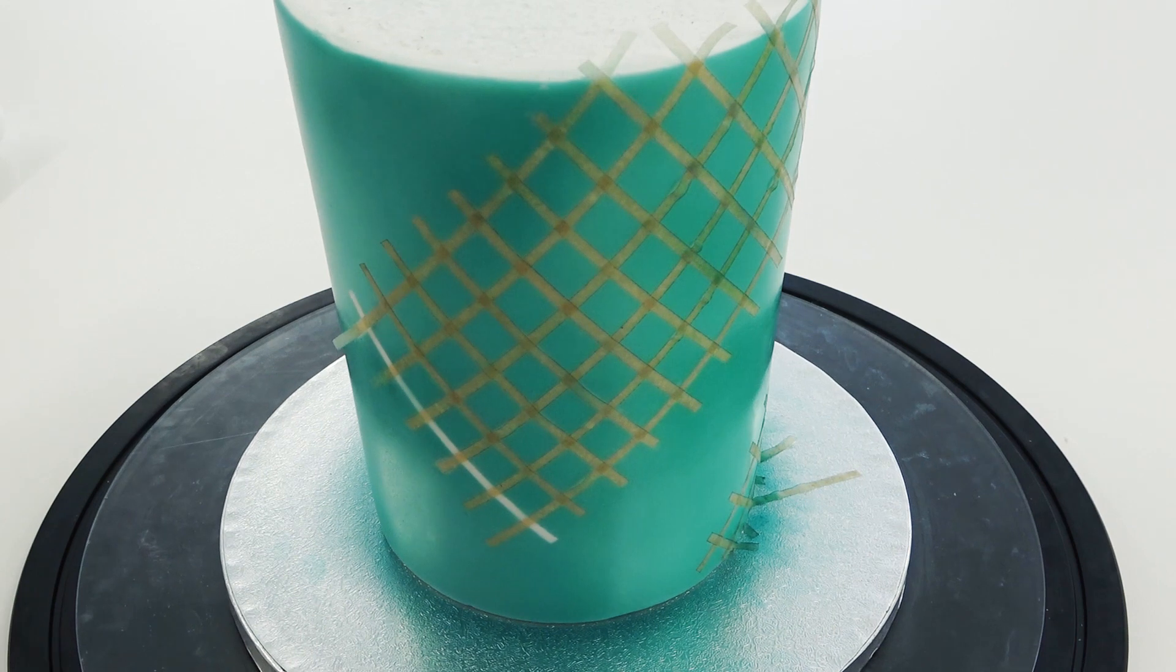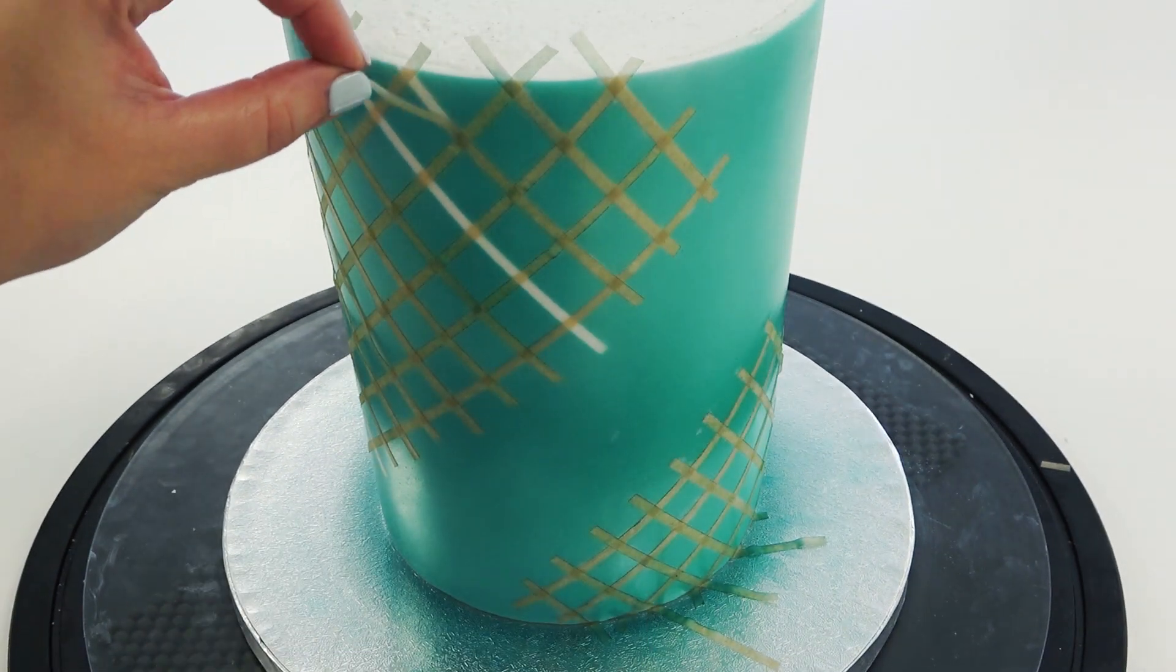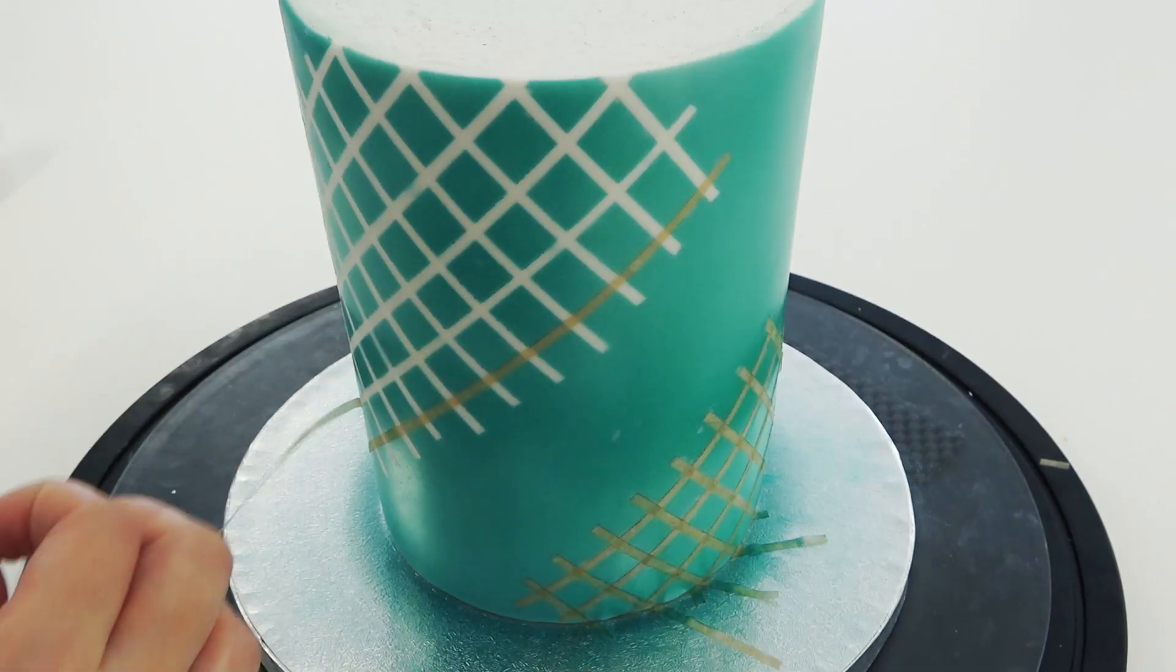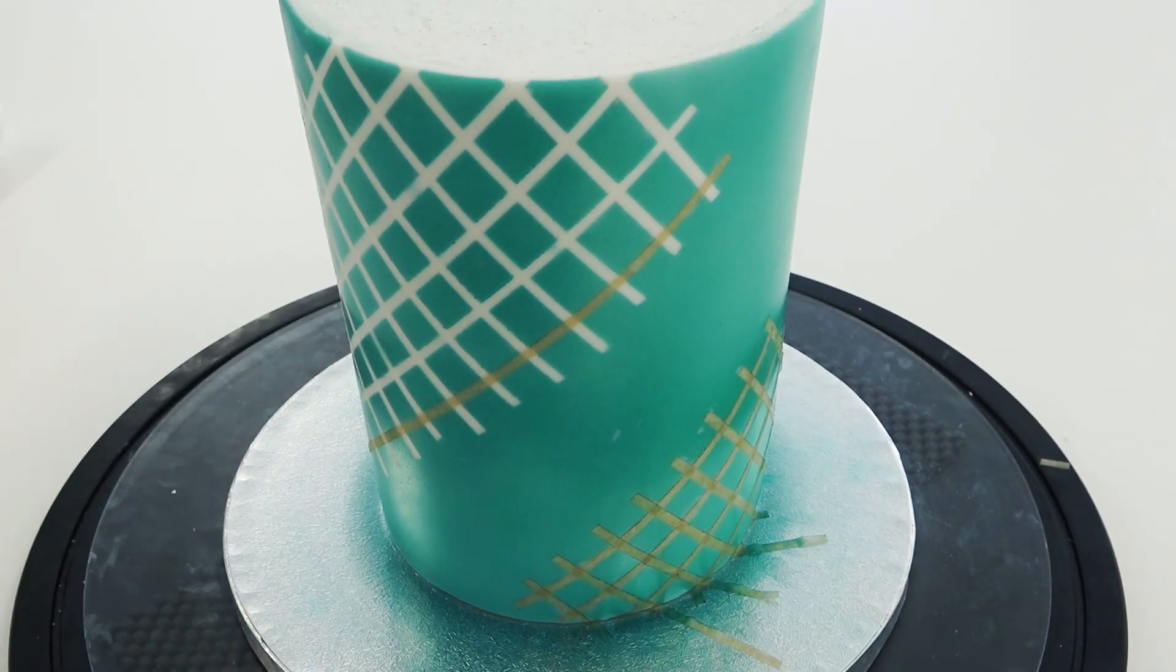Carefully start removing your pieces of paper for a very satisfying pattern underneath. As you can see between the two grids you can see a tiny little smudge so neatness really is the key here.